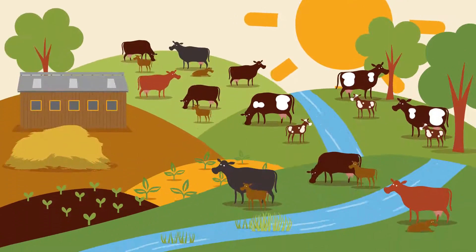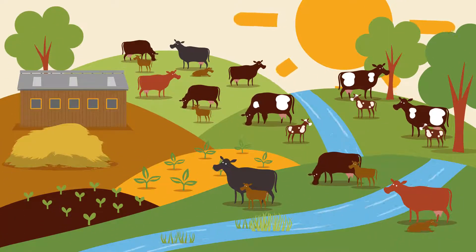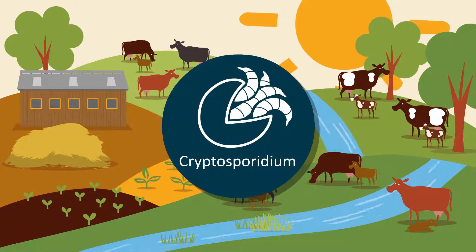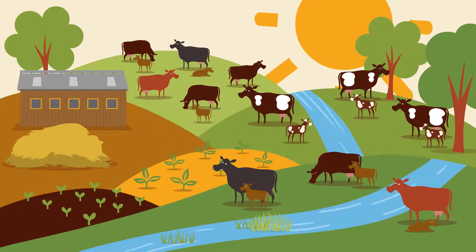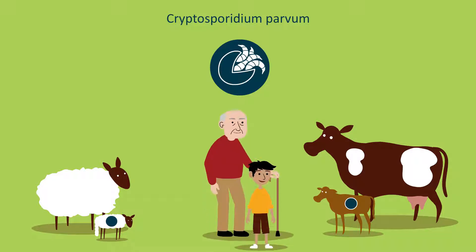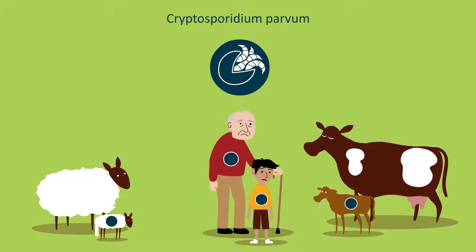Cryptosporidium is a tiny parasite that can infect animals and people, causing a severe diarrheal disease called cryptosporidiosis. It is widespread in the environment and can survive for years in damp, humid conditions. The crypto parasite needs a host animal to complete its lifecycle and multiply. Cryptosporidium parvum is an example of a zoonotic parasite, as it can cause disease in animals and people.